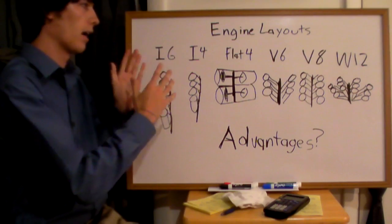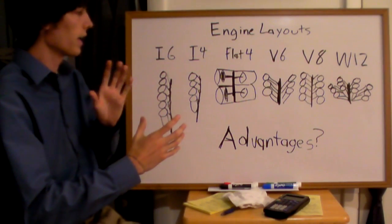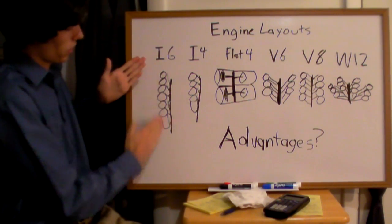Now the first letter, the I4 or the V6, is going to be the layout and that means that your cylinders are in a certain shape.